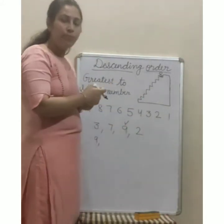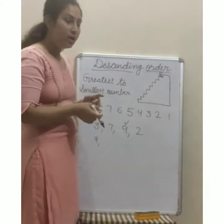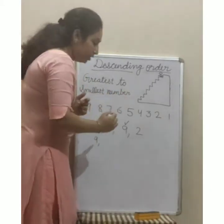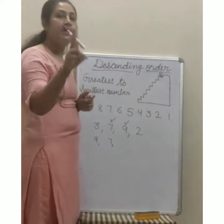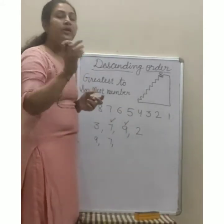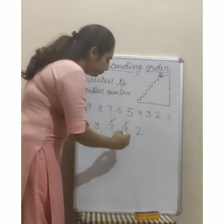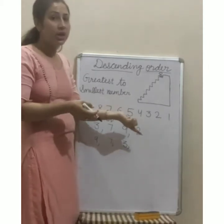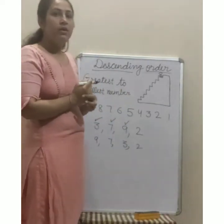अब 3, 7 और 2 में से कौन सा greater है? 7। तो write here 7। Okay? अब how many numbers are left? 2 numbers are left — 3 और 2। अब 3 और 2 में से which number is greater? 3 है। तो next number 3 आएगा। And put the tick sign। And last remaining number 2 — write here 2। Understood?